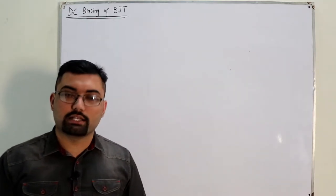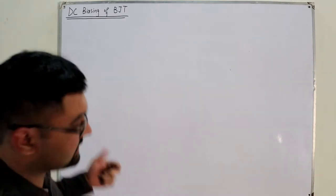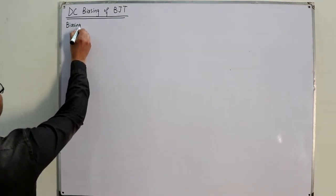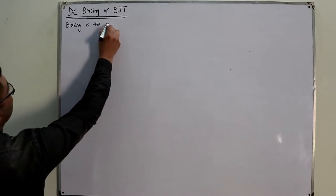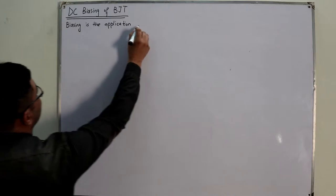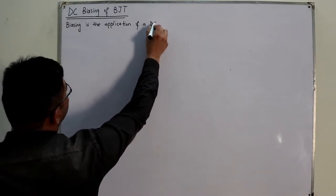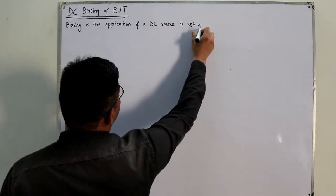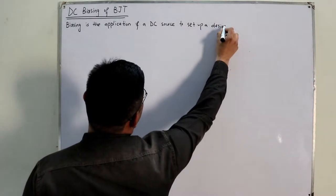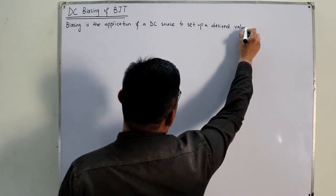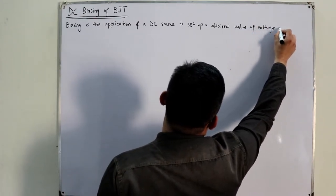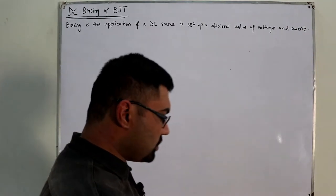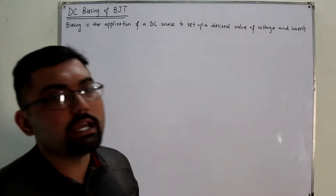We've seen biasing of the diode as well — the same concept applies here. Biasing is the application of a DC supply to set up a desired value of voltage and current. You give it a supply, a voltage is set up across it, a current flows through it, and that is known as biasing.